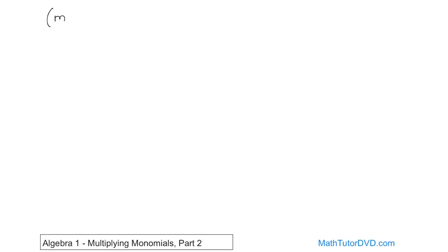So what if you have m squared times n, that's one of the monomials, multiplying times m times n to the fourth power? We want to simplify this. We're multiplying these guys together.